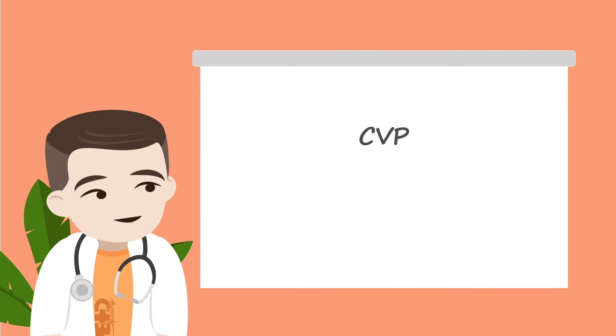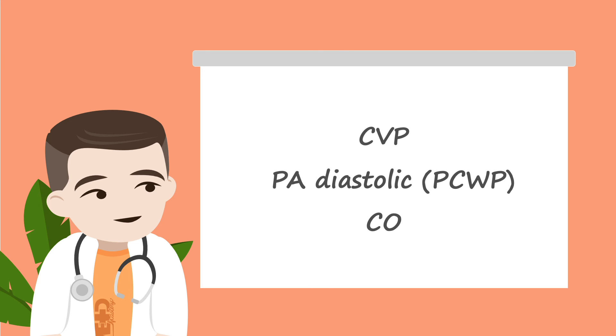The measurements most useful from the PA catheter in routine patient management are CVP, PA diastolic or PCWP, and cardiac output, which you learned how to measure in Chapter 1. In the next MedMastery lesson, we'll learn how to take these measured values and calculate other important hemodynamics to help with patient management.